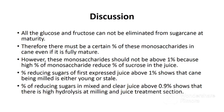All the glucose and fructose cannot be eliminated from sugarcane at maturity. Therefore, there must be a certain percentage of these monosaccharides in cane even if the sugarcane is fully mature. However, these monosaccharides should not be above 1%. A high percentage of monosaccharides reduces the percentage of sucrose in the sugarcane. If the percentage of reducing sugars in first expressed juice is above 1%, it shows that the cane being milled is either young or stale. When cane is young, most of the glucose and fructose have not yet converted to sucrose. While when sugarcane is harvested, sucrose inversion starts, especially if the cane is injured or exposed to high temperatures. So overstayed cane has high reducing sugars compared to fresh cane.